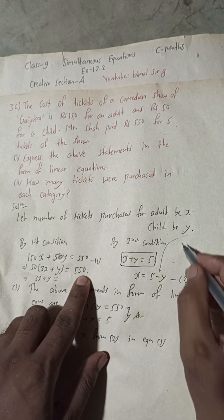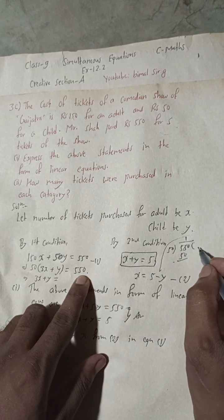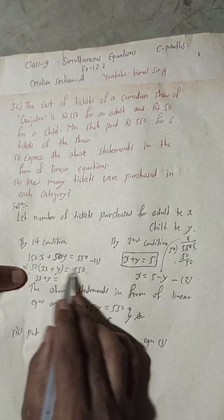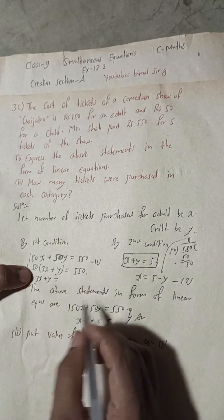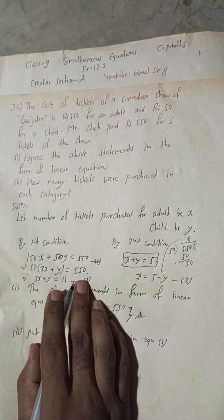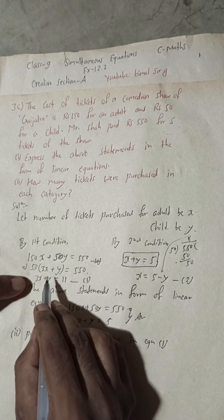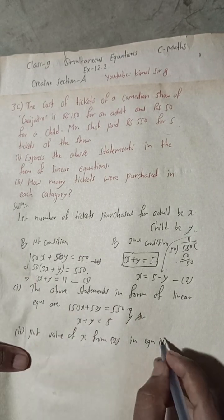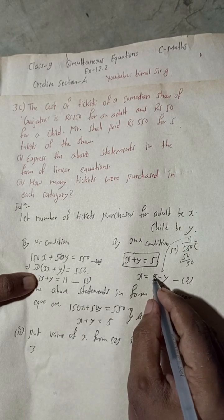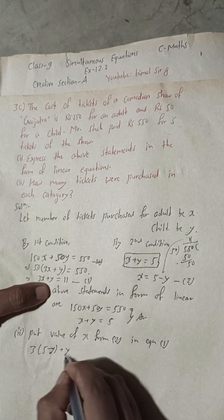Now we put the value of X, which is 5 minus Y, into the simplified equation 1. So 3 times (5 minus Y) plus Y equals 11. This gives 15 minus 3Y plus Y equals 11, which means minus 2Y plus 15 equals 11.